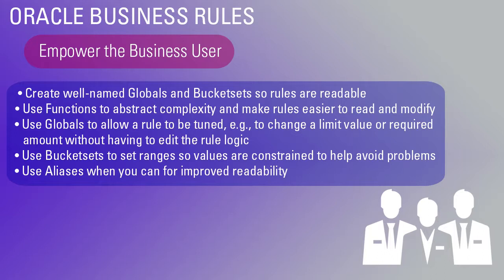Business rules can declare functions. Functions contain procedural logic or combinations of complex logic. For example, a rule might say: if I'm ready for the discount, then take this action. That's a very easy rule to read, but the logic behind "ready for the discount" is pushed into a function that can be very complicated with lots of different steps. The rule stays very readable, and functions abstract complexity to make the rule easier to understand and modify.